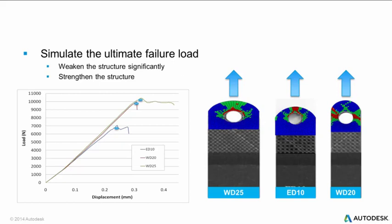Using Autodesk Helius PFA allows us to simulate past first ply failure and capture the ultimate failure load of the geometries. This type of information is very valuable when selecting the geometry for a specific application.